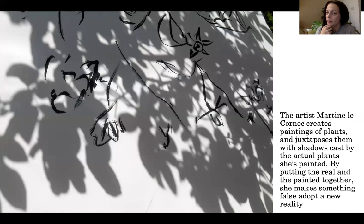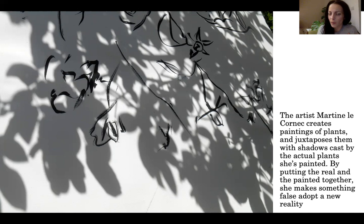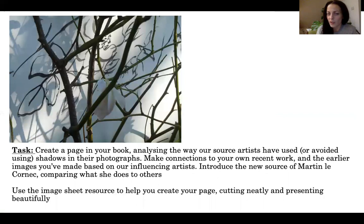A new artist for us today is Martine Le Cornec. She creates paintings of plants, but then juxtaposes her paintings with the shadows cast by the actual plants she's painted. By putting the real thing and the image together, she creates something new that has a sense of falseness. It's a really strange way of interplaying reality with an image, and it's something we could really have a look at together in class later. You can see on the screen now we've got the painted flower forms and then we've got the shadows — that happens in her work across really all of it.